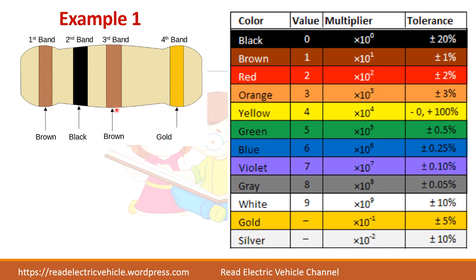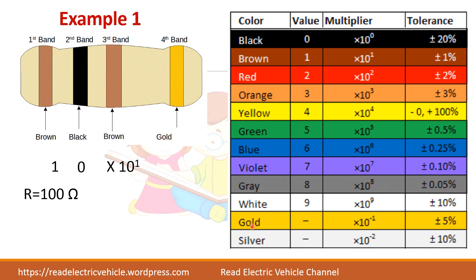Now let us take an example and find the value of a resistor. This resistor has four bands. You can see the fourth band is gold, so that is the tolerance band — keep it to the right and start reading from the left. You have brown, black, and brown. Brown is 1, black is 0, so the first two digits give 10. The third band is the multiplier band: brown means 10 power 1, which equals 10. So the resistor value is 10 multiplied by 10, which is 100 ohms.